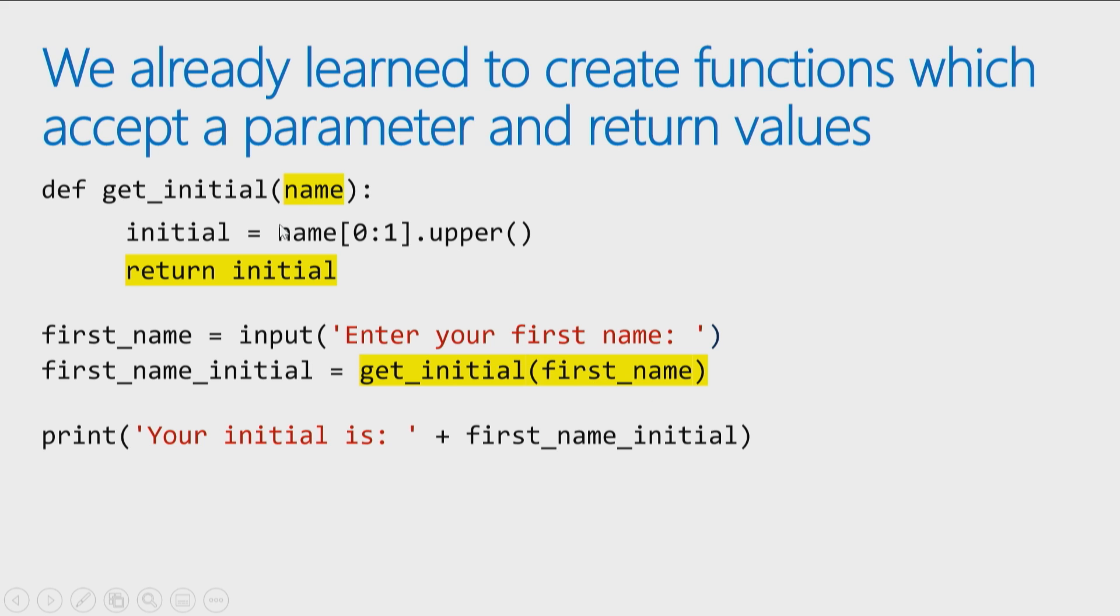Whatever is passed in gets used in the code wherever you see the word name, and when this function is completed, it returns a value. When I call the function, I have to have a place to put it. So in this case, when I call getInitial, the value I receive back from the function gets put into the variable first_name_initial.